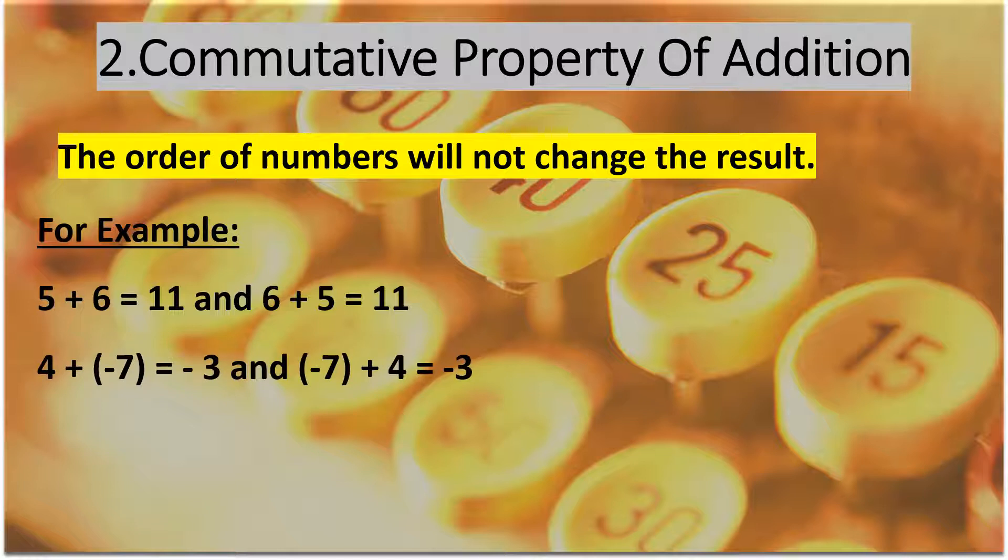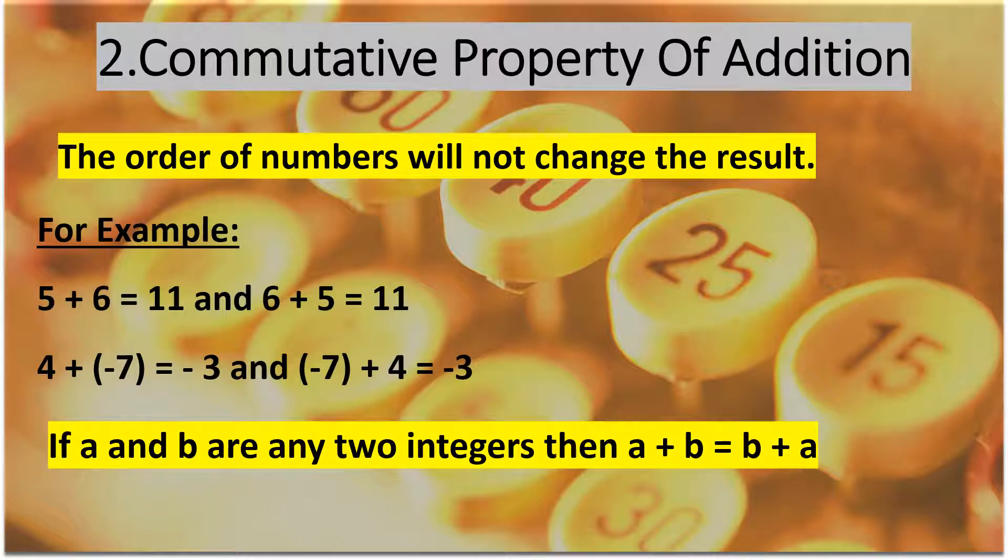4 plus minus 7 is equal to minus 3, and minus 7 plus 4 is also equal to minus 3. As you can see, I have changed the order of the numbers, but still the result remains the same. Therefore, this property tells us that if A and B are any two integers, then A plus B is equal to B plus A.